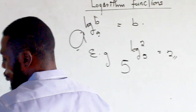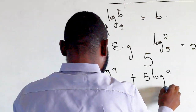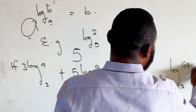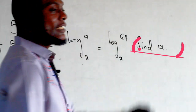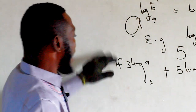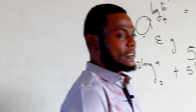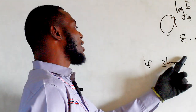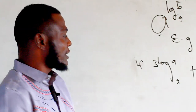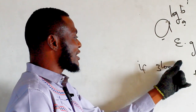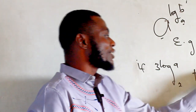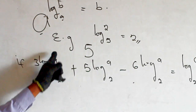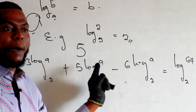For example, 5 raised to the power of log base 5 of 2 — the answer is 2. Today we'll be looking at some questions. Find the value of a. This can be solved in so many ways. We can solve this by letting log a base 2 equal x. Anywhere we see log a base 2, we can substitute x.